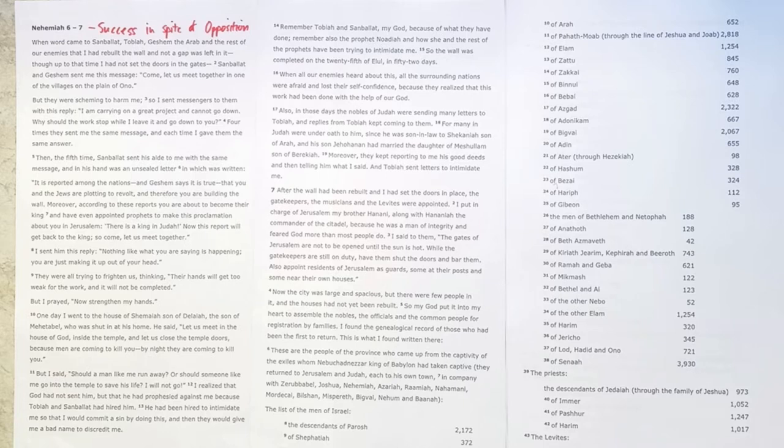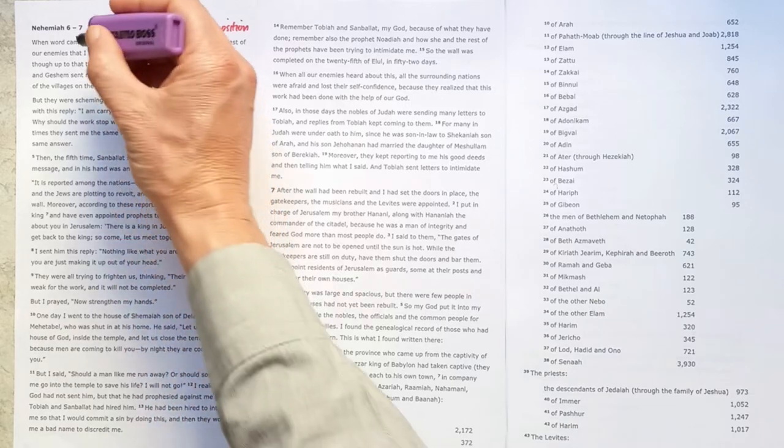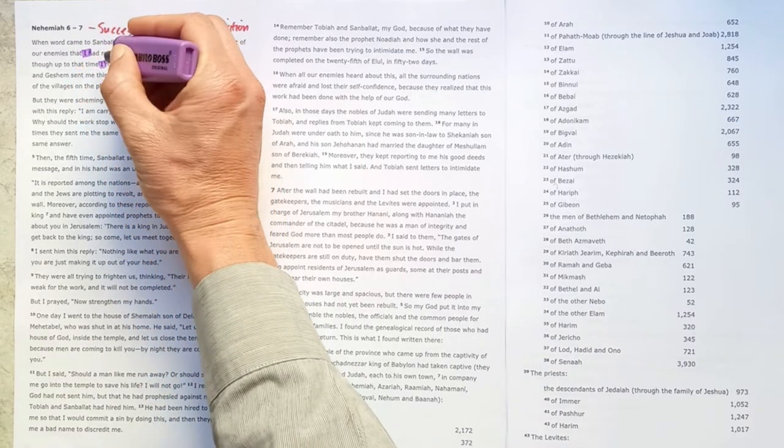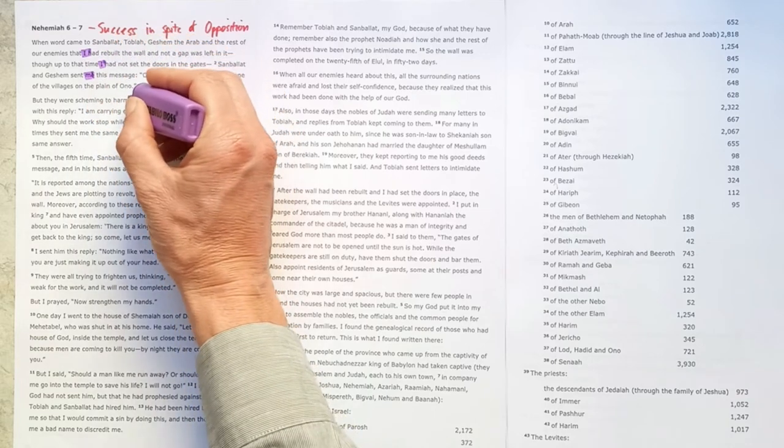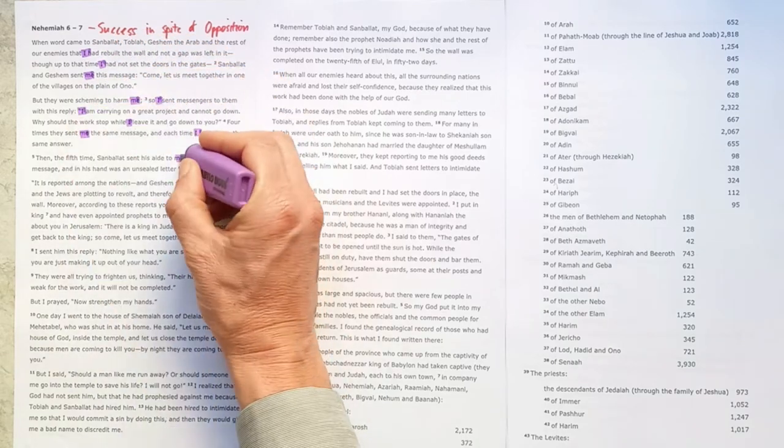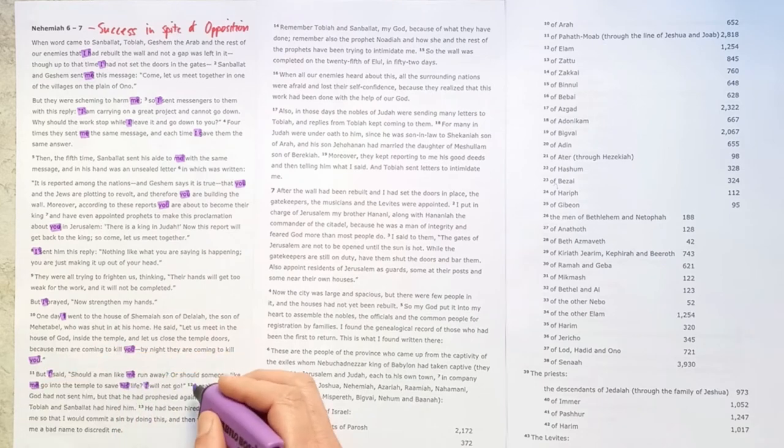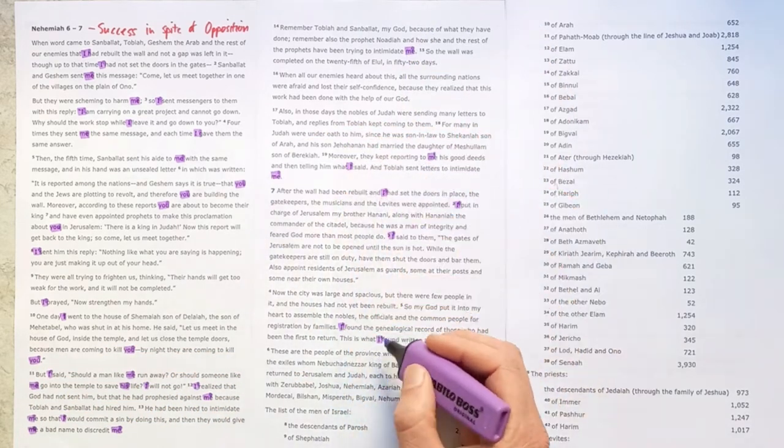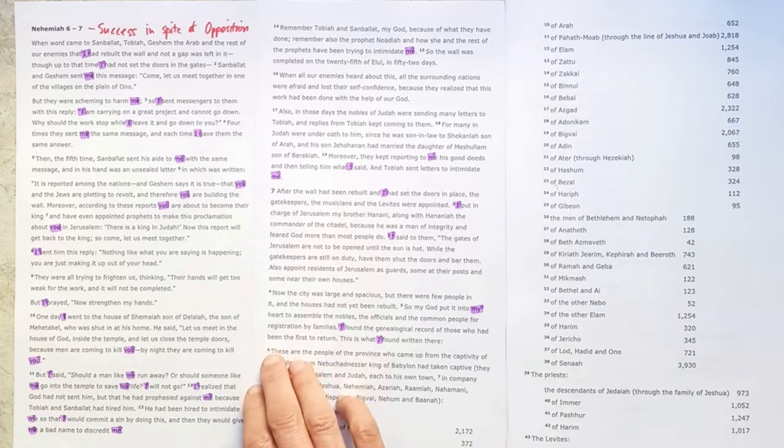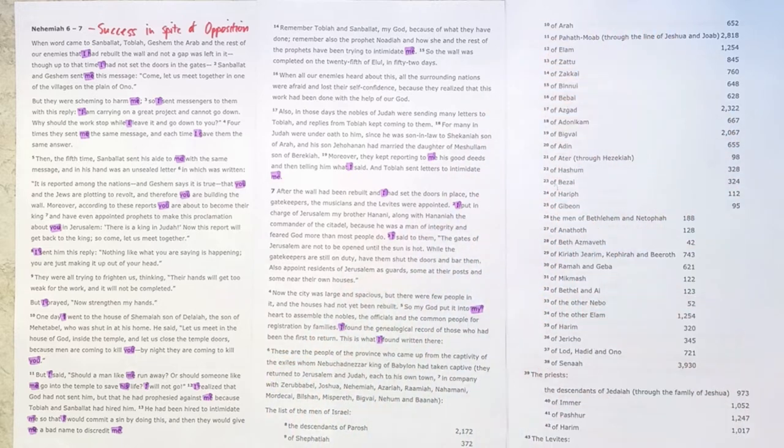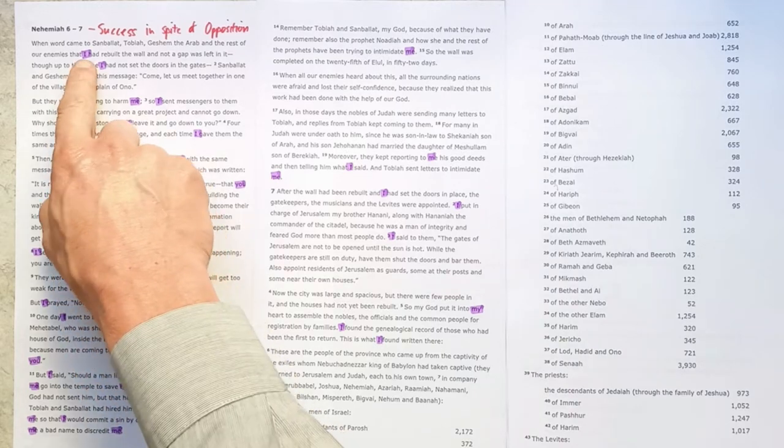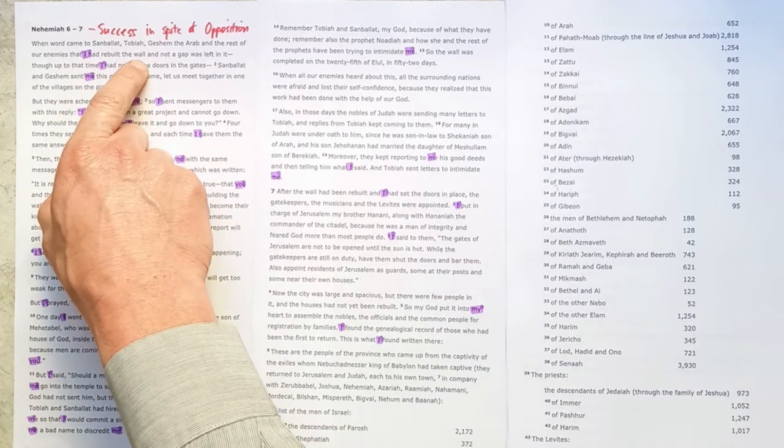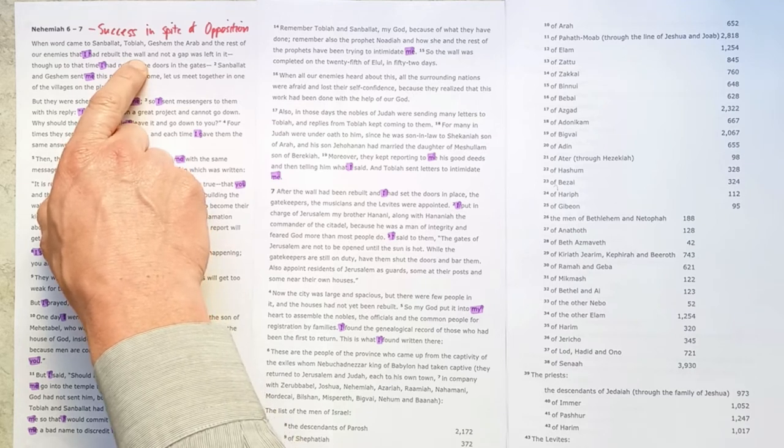One very important thing to notice in this section is that the spotlight is very much on Nehemiah. So using the character's tool, we see he mentions himself a number of times. Now I'll explain in a moment why I only marked up to verse 5 in chapter 7. But it's important to notice this repetition at this stage. And Nehemiah says, 'I had rebuilt the wall.' So the spotlight is very much on him.